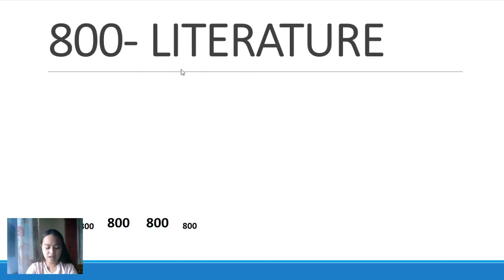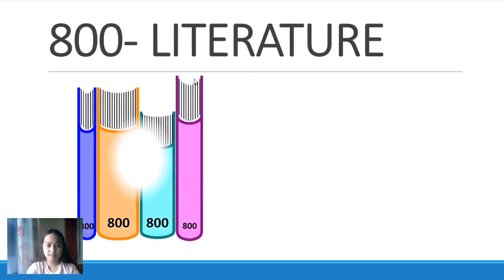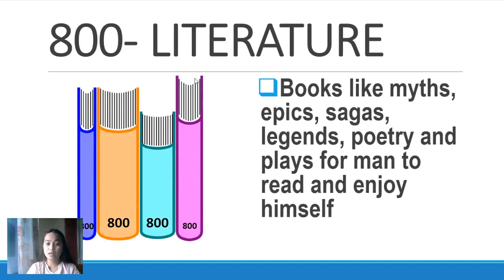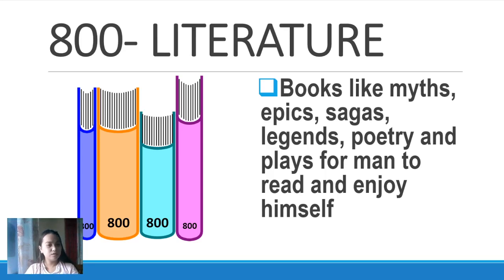Now, 800 — it's all about literature. Books like myths, epics, sagas, legends, poetry, and plays for men to read and enjoy. These include fiction books, legends, poetry — literature is a creative writing. So if you like poems, poetry, or epics, you can search that in the 800 section.